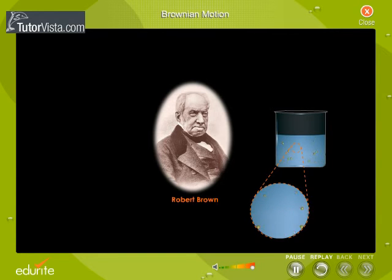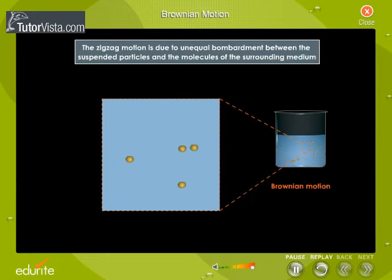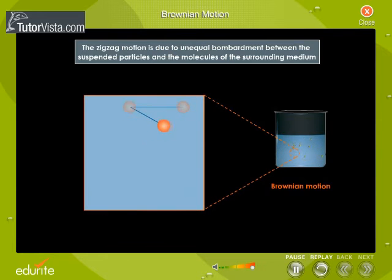This type of motion is referred to as Brownian Motion. This zigzag motion is due to unequal bombardment between the suspended particles and the molecules of the surrounding medium. The zigzag motion can be explained with the help of an example.